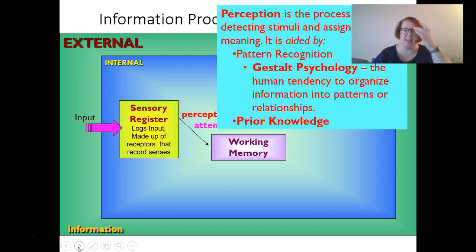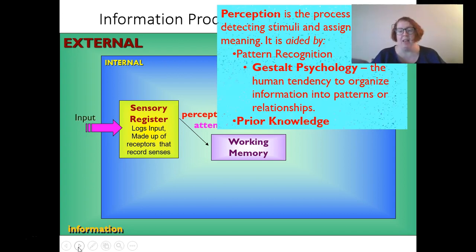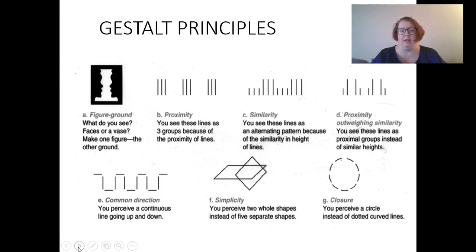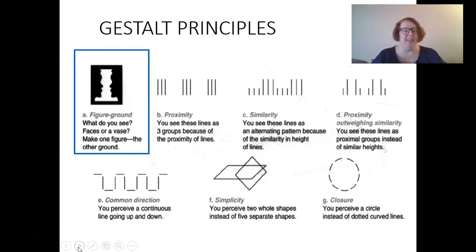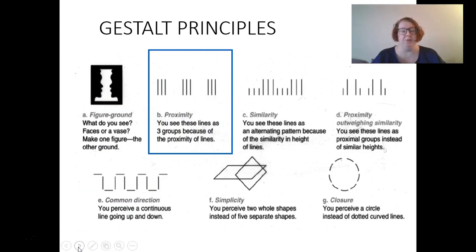Our perception is aided by pattern recognition, which in gestalt psychology is our human tendency to organize information by patterns. This helps us recognize things more quickly and easily. There are quite a few different kinds of patterns we can recognize as part of the gestalt. Figure-ground relationships — for example, do you see a vase or faces in that first picture? We very quickly differentiate between what's in the foreground and what's in the background. And we very easily see three groups of lines because of proximity — we group these quickly because of proximity.